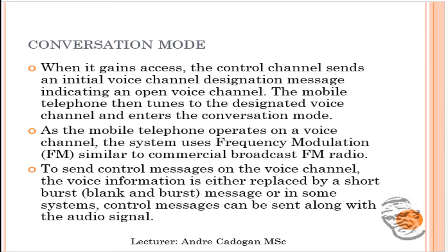In conversation mode, when you gain access, the control channel sends an initial voice channel designation — similar to a TCP/IP three-way handshake — indicating an open voice channel. It uses CSMA/CA for collision avoidance. The mobile telephone then tunes to the designated voice channel and enters conversational mode using FM modulation. Control messages are sent in the voice channel via short, blank, and burst messages. So even in conversation mode, control information takes place through stop-and-burst messages.